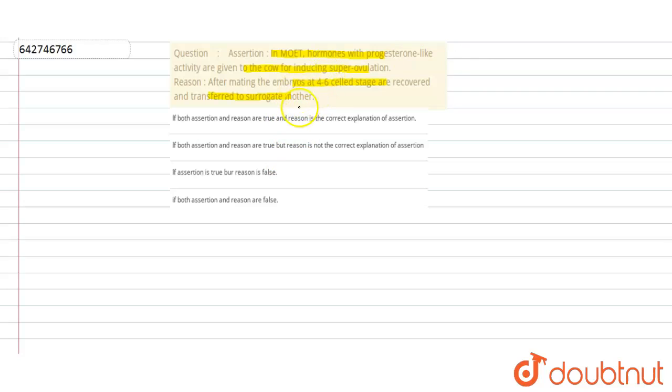We have to choose whether assertion and reason are true or false, and if true, whether reason is the correct explanation of assertion. Here we will see about MOET. MOET is multiple ovulation and embryo transfer. In this MOET technique, the cow, that is the female cattle breed, is treated.